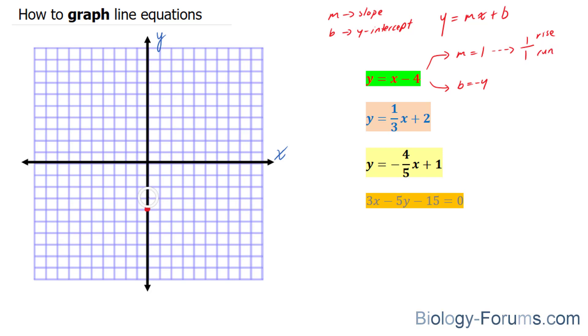So we're going to rise 1 up, because it's positive 1, and run 1 to the right. Put another point right there. And then you can keep doing this. Now you don't need to do it more than two times. You already have two points, so you can easily create a line right now. But I'll just create some more points.